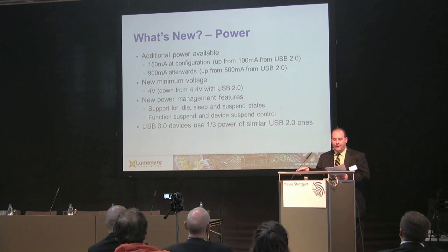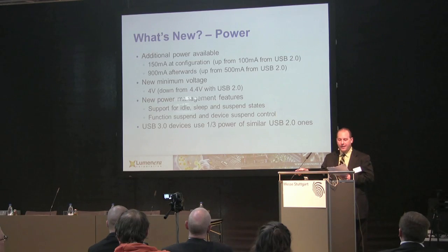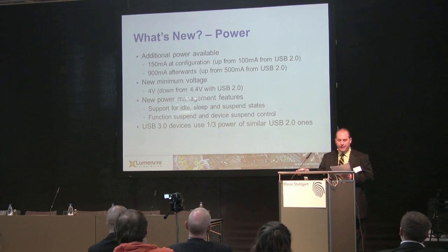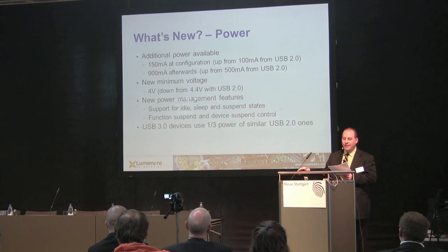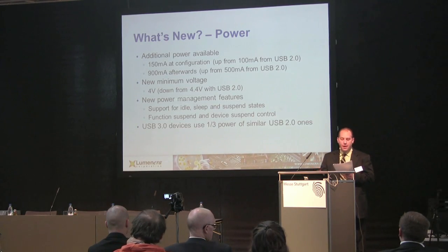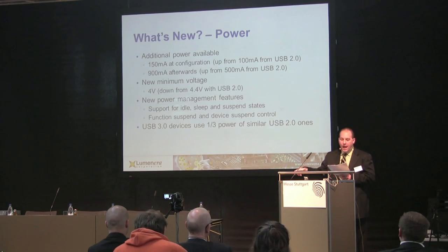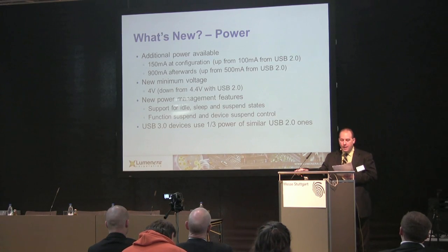One challenge that USB 2 products faced was the limited power provided across the USB bus. This was addressed with the new USB 3 specification. The designers realized that modern products are higher performing and require more power, so they added an additional 50 milliamps of power at configuration time and another 400 milliamps at run time. This allows USB devices to run without a separate power brick or clumsy Y connectors — cables with two type A connectors and one type B that draw power from both type A connectors. A small drawback is that the minimum voltage dropped from 4.4 volts to 4 volts, which device designers should be aware of.